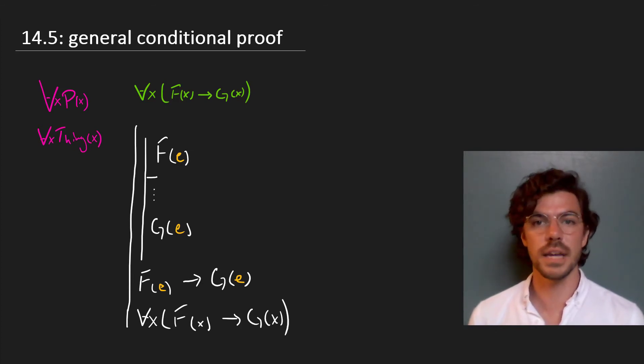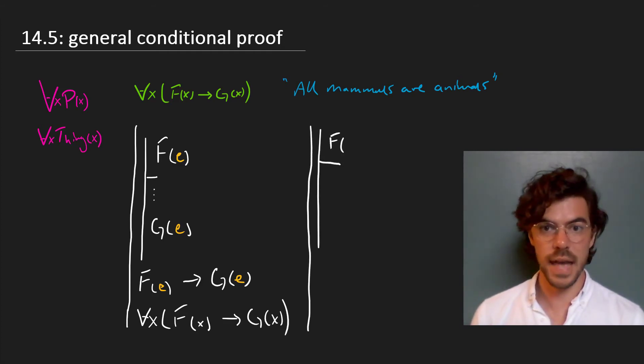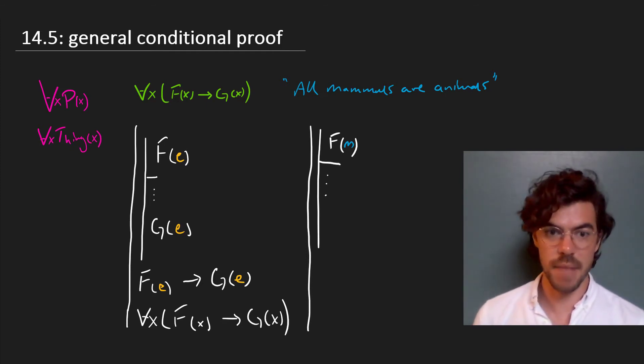Suppose we want to prove the statement, all mammals are animals. Well, here's how we go about constructing our proof. We just pick an arbitrary mammal, call it m. We don't have any commitment to what kind of mammal m is. It's just some arbitrary mammal.